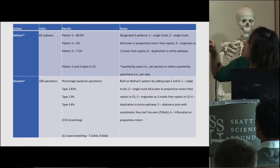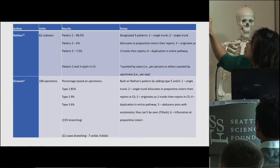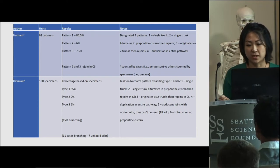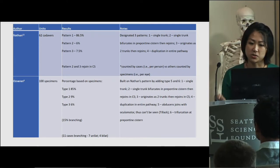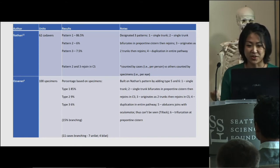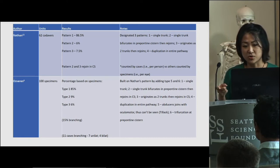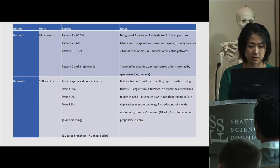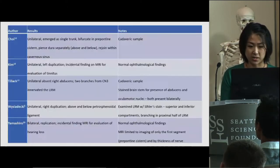Nathan et al. started the designation pattern from one to four: pattern one as a single trunk, two as a single trunk that bifurcates in the prepontine cistern then rejoins, three as a nerve originating as two trunks then rejoining, and four as a duplication along the entire pathway. Osverein then added to this by adding type 5 and type 6.